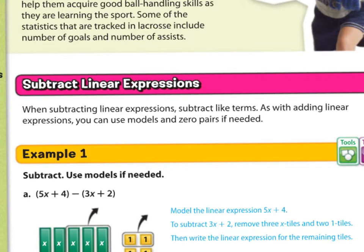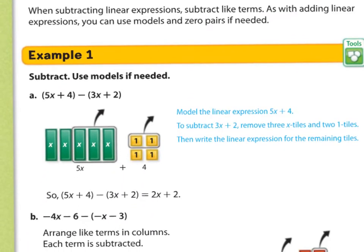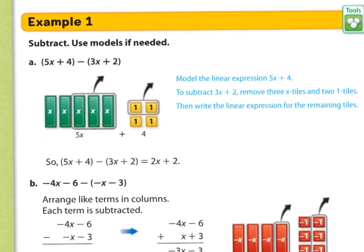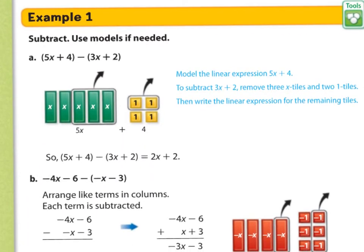So here we have the models with our algebra tiles, and you can see that we're still doing something similar to lesson 7-3 where we were adding, except now we are subtracting. You can see the symbol there. So we have 5x plus 4 minus 3x plus 2.